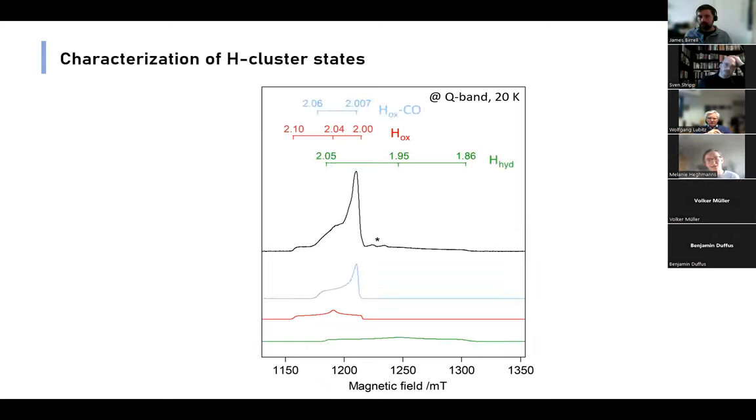To deconvolute the H-cluster states in the reduced enzyme, we elevated the temperature to 20 Kelvin so that the 4Fe-4S clusters are brought beyond detection. Here we found the H-ox, the H-ox-CO, as well as the H-hyd state, which was also supported by our FTIR data.